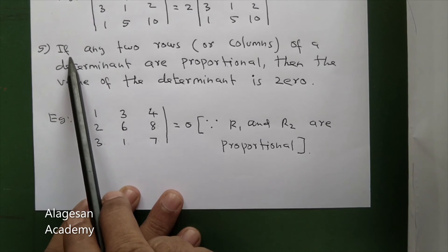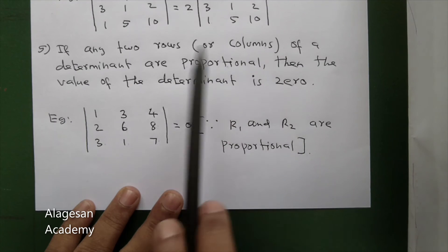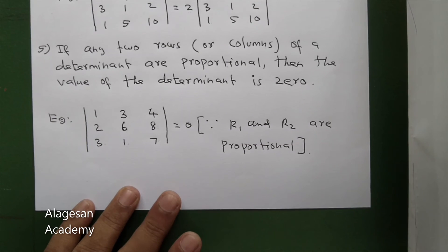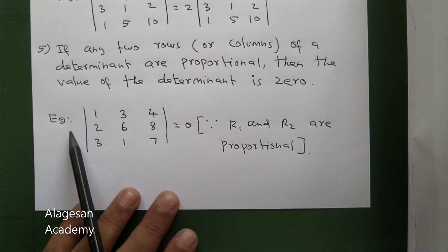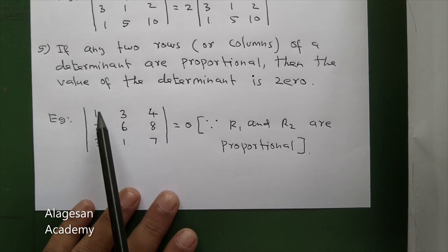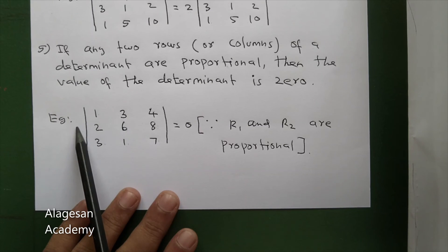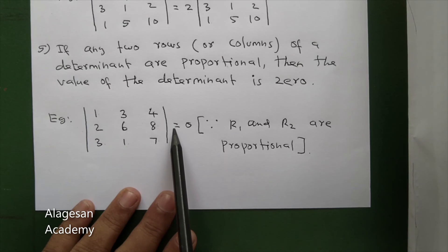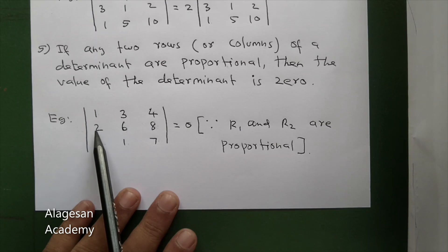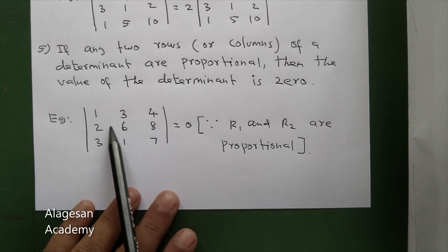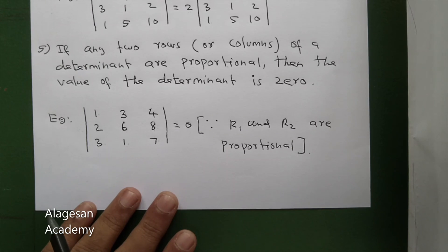So, if any two rows of a determinant are proportional, the value of the determinant is zero. Similarly, if any two columns of a determinant are proportional, the value of the determinant is also zero. The determinant value equals zero.